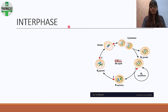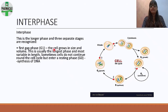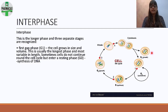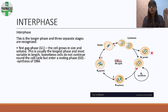Interphase is the long phase and has three separate stages. The first is the G1 phase, or first gap phase. The cell grows in size and volume — G stands for growth. This is usually the longest and most variable phase in length, since some cells grow quickly and some do not, depending on their structure.